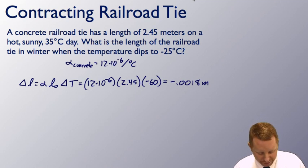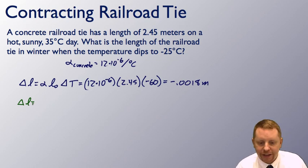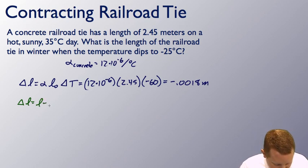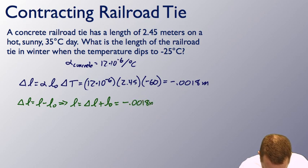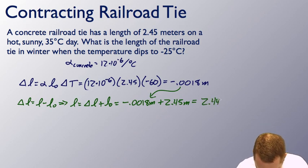If I want to find what its final length is, I need to realize that change in length is always the final value minus the initial value. That will be L minus L initial, and if we want the final value L, that's just going to be delta L plus L initial, which is negative 0.0018 meters plus its initial length of 2.45 meters to give us a final length of about 2.448 meters. It got colder, we can see that it contracted. It got smaller. That makes sense.